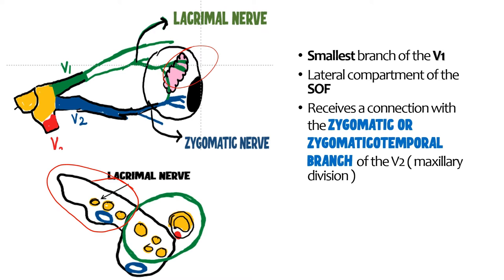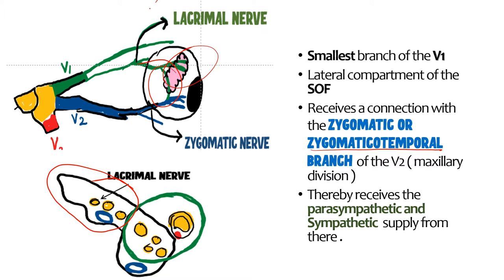What is important is the connection between the lacrimal nerve and the zygomatic nerve. This connection can be between the zygomatic nerve and the lacrimal nerve, or between the zygomatico-temporal branch and the lacrimal nerve. The zygomatic and zygomatico-temporal branches are branches of the maxillary division of the trigeminal nerve. The lacrimal nerve is responsible for sensory supply, but because of its connection with the zygomatic or zygomatico-temporal branches of V2, it also receives parasympathetic and sympathetic supply, making the lacrimal nerve the final common pathway for all three types of innervation.